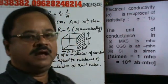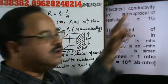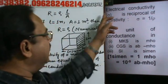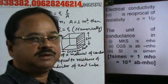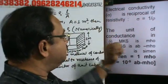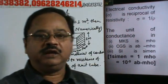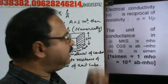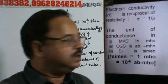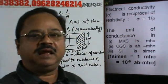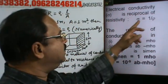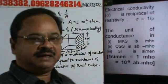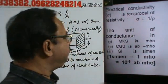Similarly, there is another term: electrical conductivity. This is called electrical resistivity, and its reciprocal is called electrical conductivity, which is denoted by sigma. So electrical conductivity sigma is equal to one by rho. This is also a characteristic of the material of the conductor.